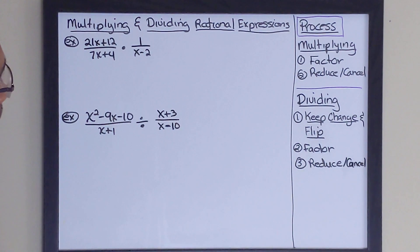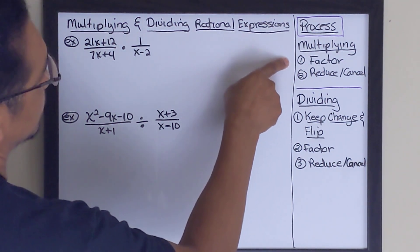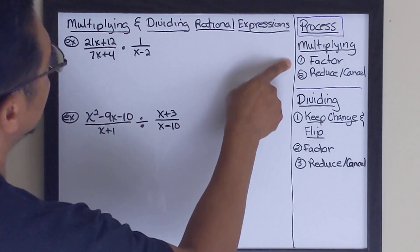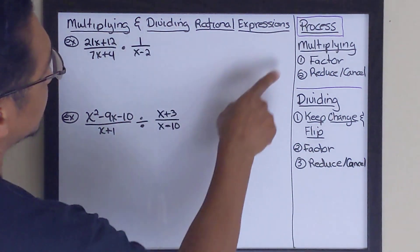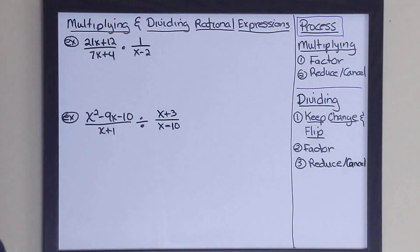The first is basically you want to factor every expression that's factorable in your problem. And then the second is to reduce and cancel before you completely multiply the problem.